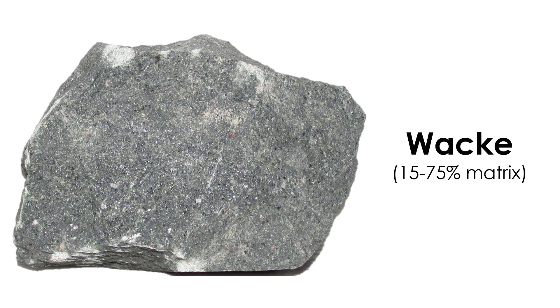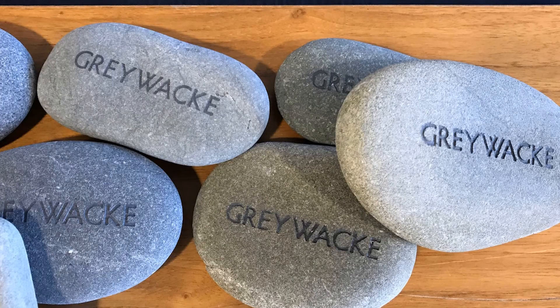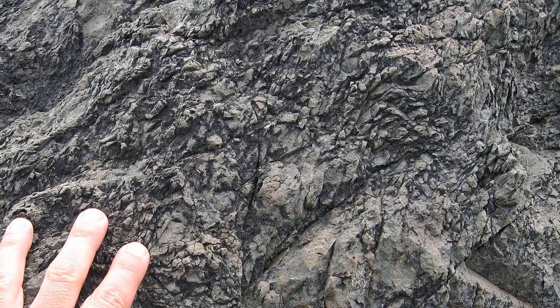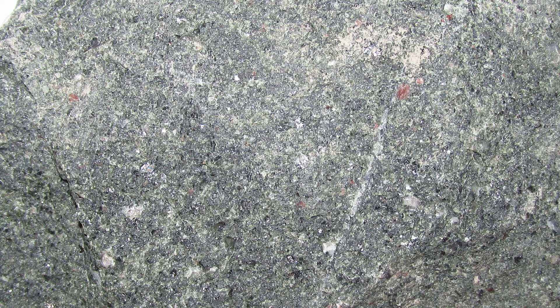If a sandstone contains a lot of matrix material instead, then we call it a wacke. You will also sometimes see them called graywackes because of their color. Wackes are generally not what you picture when you think of a sandstone. By the numbers, they are anywhere from 15 to 75 percent matrix — there may be more silt and clay in a wacke than sand. As a result, wackes tend to have a smoother feel than arenites, and the grains aren't always easy to spot.